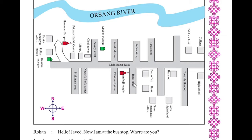This is Bank Street. Main Road has a temple. This is a temple. This is a main road. Main Road has Chipper Street. This is Chipper Street. This is Dwarkes Street. This is Medina Mosque.